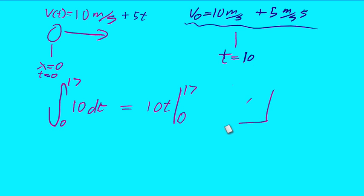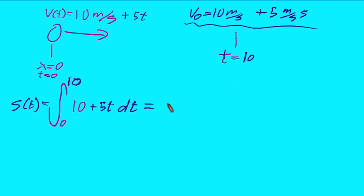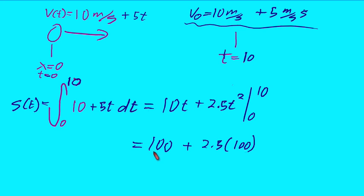This is the exact same problem, it's a little bit more complicated, but one way or the other you integrate your velocity with respect to time to get the position. So 10 plus 5t dt between 0 and 10, that's going to equal 10t plus 2.5t squared between 0 and 10. Which will equal 100 plus 2.5 times 100, this 100 is 10 times 10 of course. And all told that's going to be 350 meters.